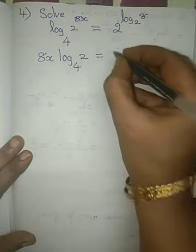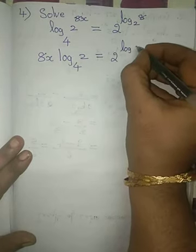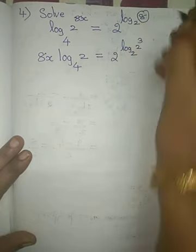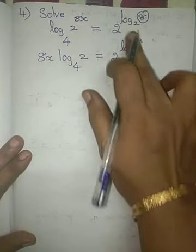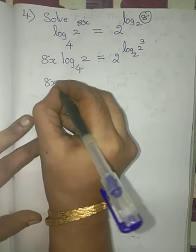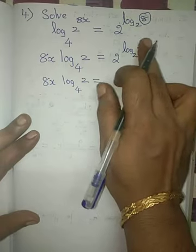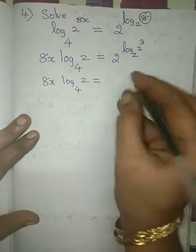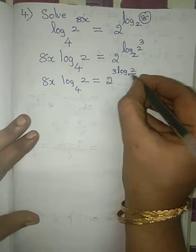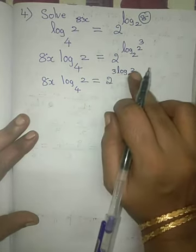Here, I am writing 8 as 2 cube — so 2 to the power 3. The base 2 I am writing as it is. Now the next step: 8x log 2 to the base 4 equals, using the power rule, let me bring the 3 out to this side. So you will have 2 to the power 3 times log 2 to the base 2.